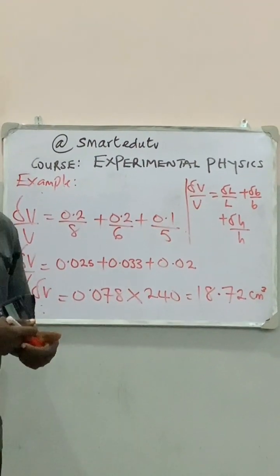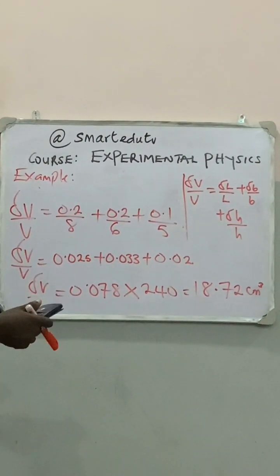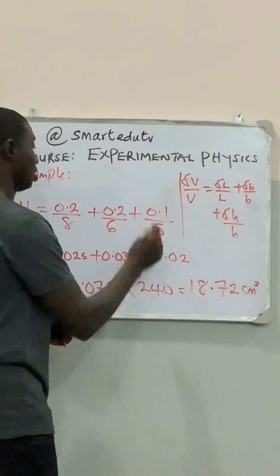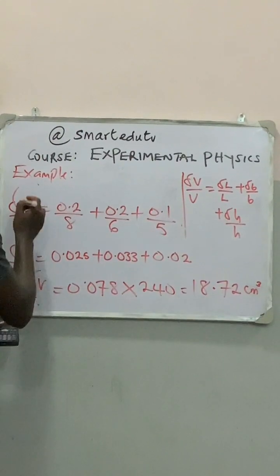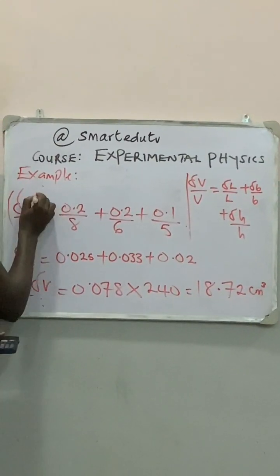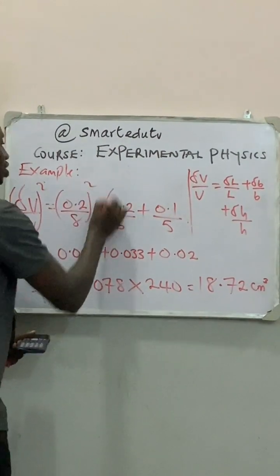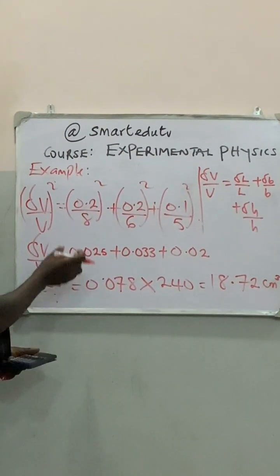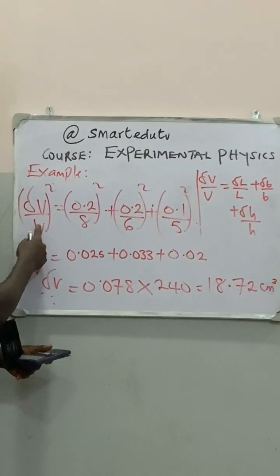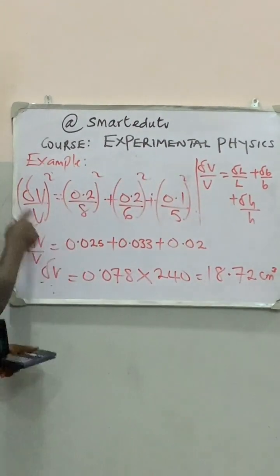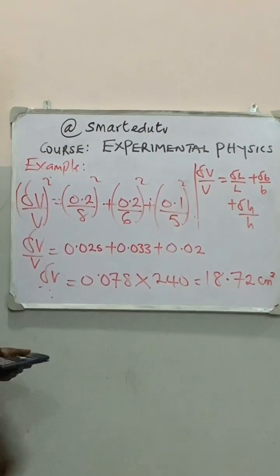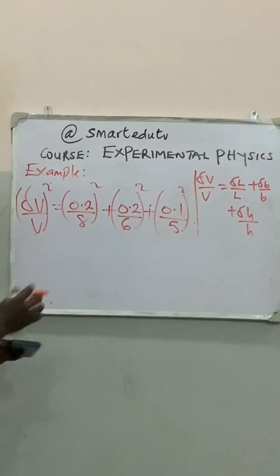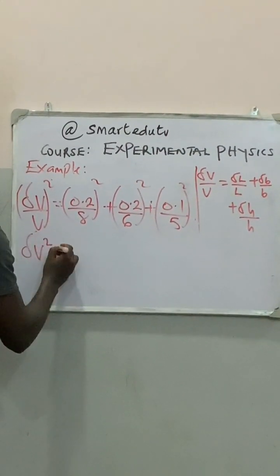In terms of the standard error, similarly, for me to calculate the standard error, instead of adding the fractions directly, I am going to square each of them and take the square root of the sum. For standard error, I square each term and take the square root of the total.